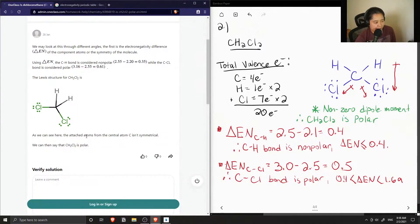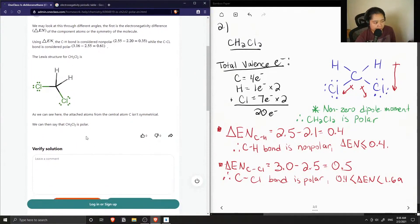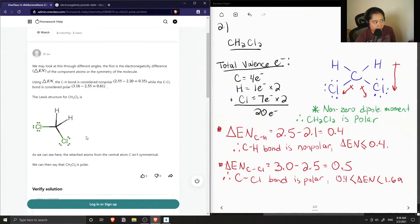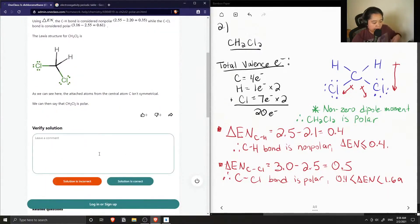And they found that the molecule wasn't symmetrical, therefore dichloromethane is polar. Okay, so this solution is correct.